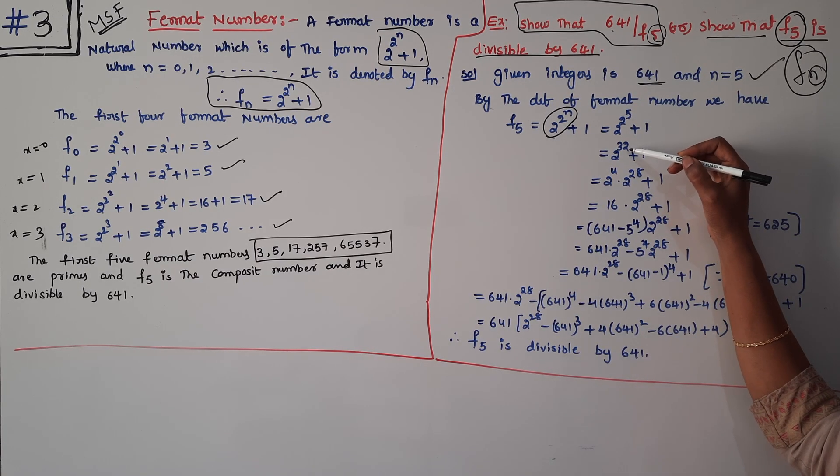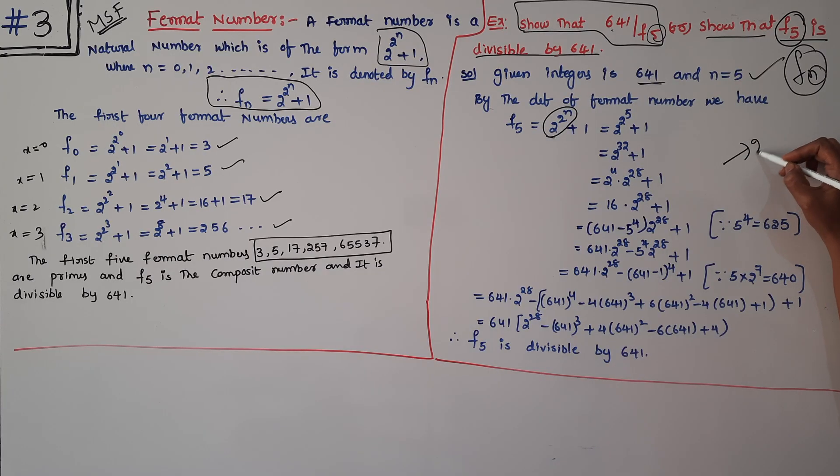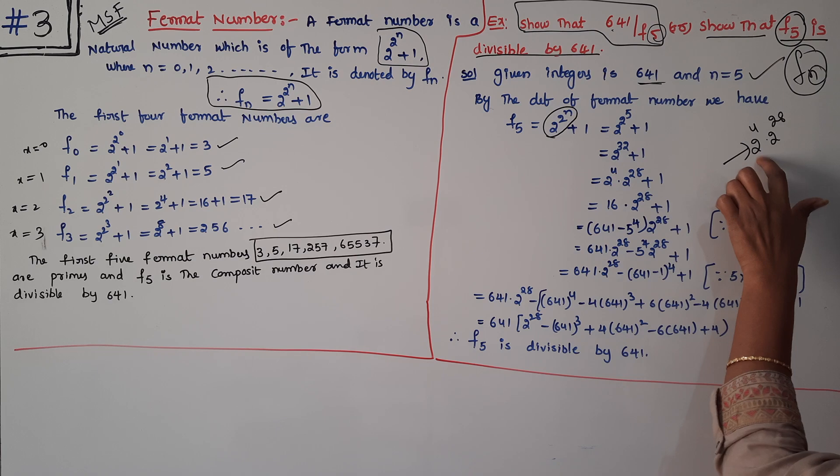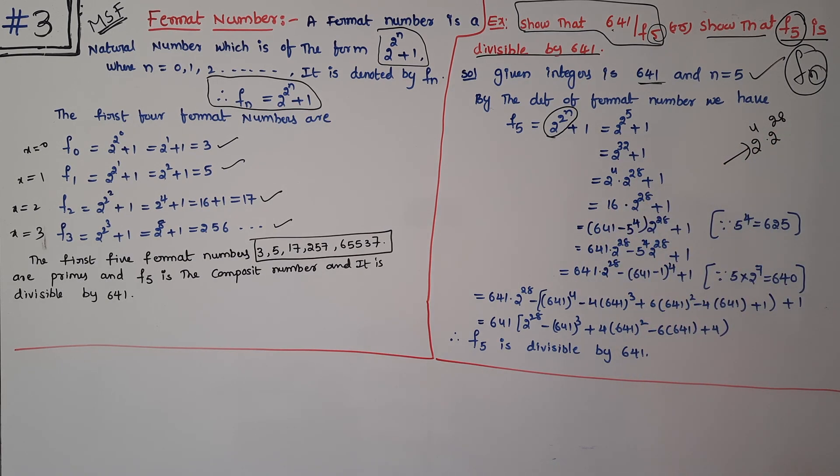Now, 2^5 = 32, so F_5 = 2^32 + 1. I will say 2^32 = 2^4 × 2^28.